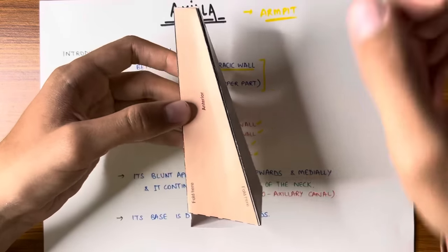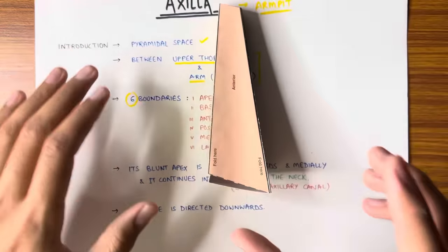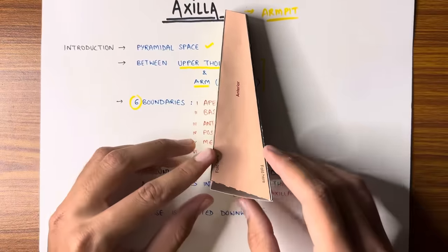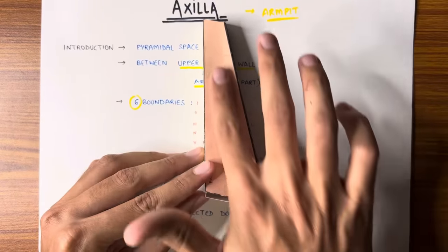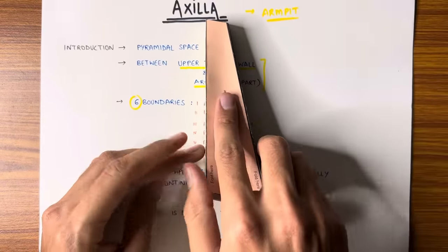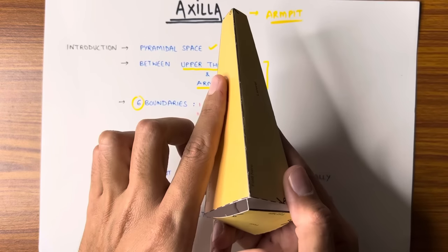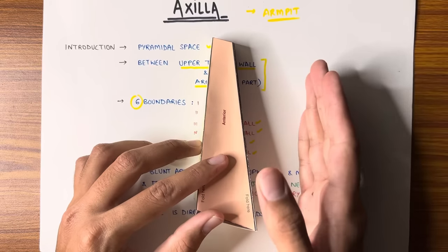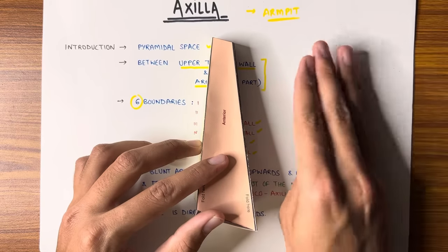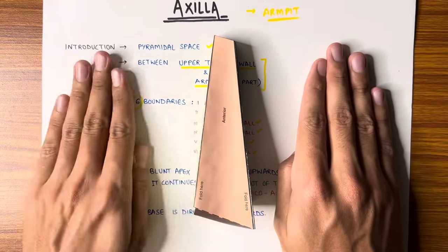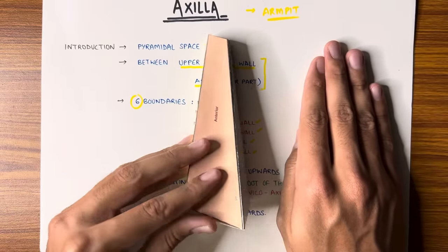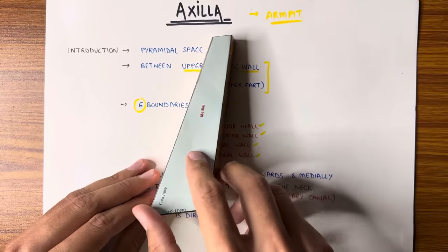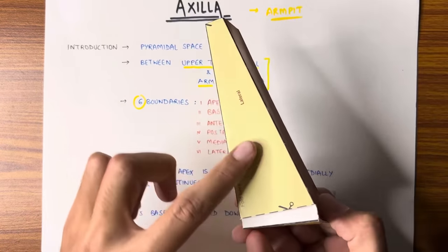This is the model we will try to understand. This is the way you are looking forward — looking forward to seeing the anterior. This is the anterior, this is the posterior wall. Medial — this is the medial side. These are the lateral side. You can see the axilla on the medial side. This is the medial wall; the opposite side is the lateral wall.